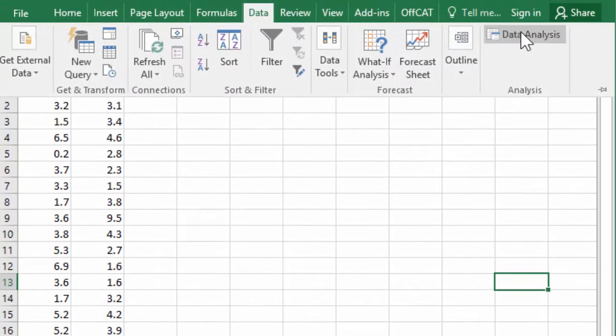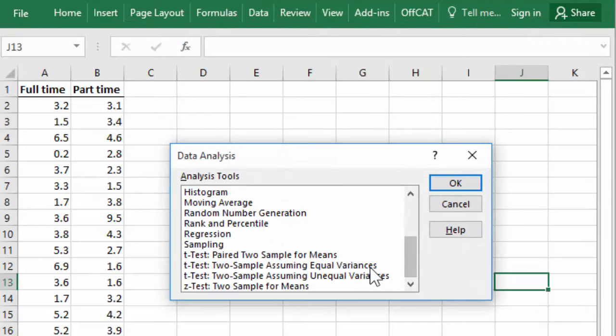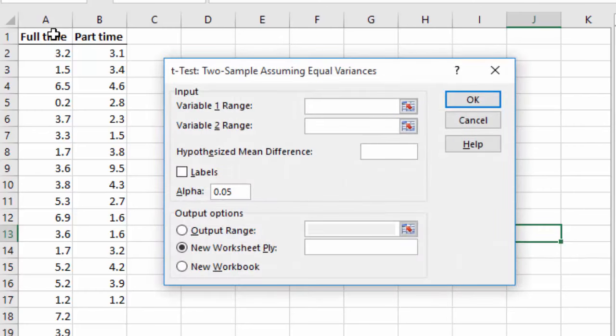Click Data, Data Analysis, select t-test two sample assuming equal variances, and click OK. For variable 1 range, I'm going to select full-time, and for variable 2, part-time.